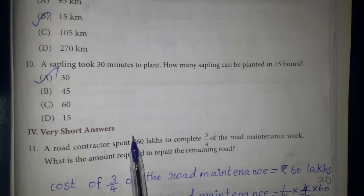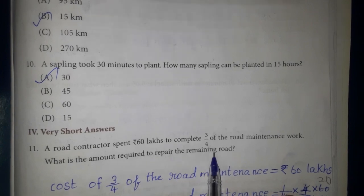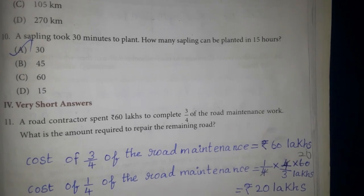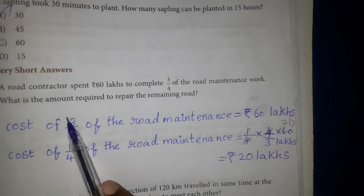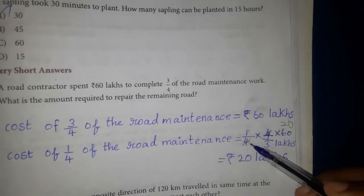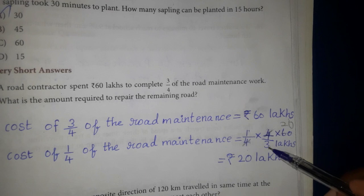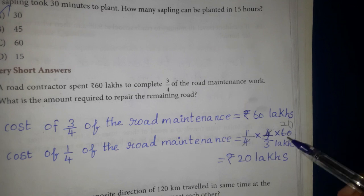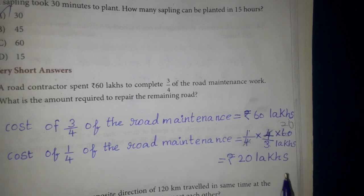Very short answers, 11th question. A road contractor spent Rs. 60 lakhs to complete 3/4 of the road maintenance work. What is the amount required to repair the remaining road? The remaining road is 1/4. Cost of 1/4 = (1/4) divided by (3/4) into 60 lakhs = (1/4) × (4/3) × 60 lakhs. 4 cancels, then 60 divided by 3 = 20. Answer: Rs. 20 lakhs.